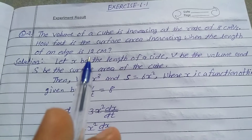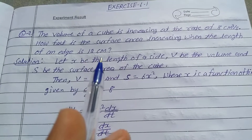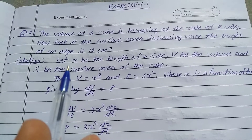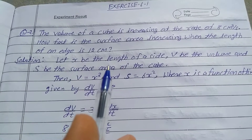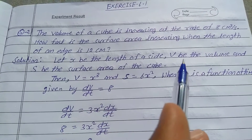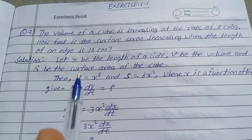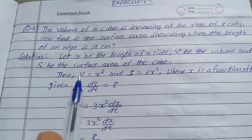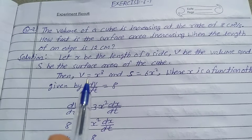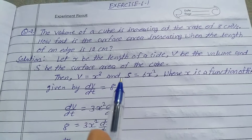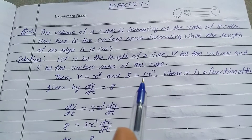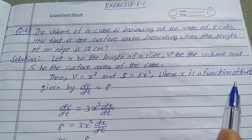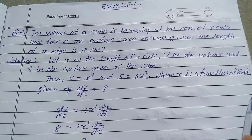Solution: Let x be the length of the side, V be the volume, and S be the surface area of the cube. Then V is equal to x cube, and S is equal to 6x square. Here x is a function of time t.